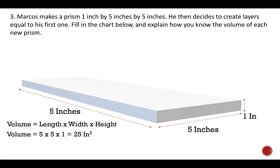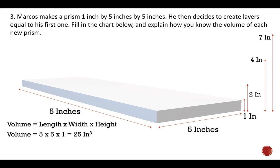The problem says he then decides to create layers equal to his first one. So if I know this is the bottom layer, each layer on top is going to be the same shape. It asks me to fill in the chart and explain how I know the volume of each new prism. The first figure had two layers, so height becomes two inches, then four inches, then seven inches. Think of it as a building getting taller — figure out how the volume increases as you add height.